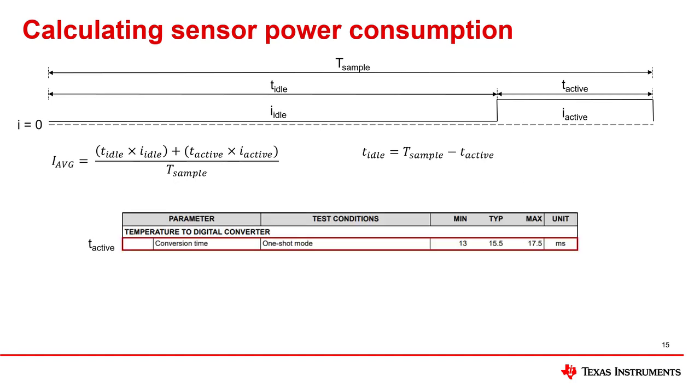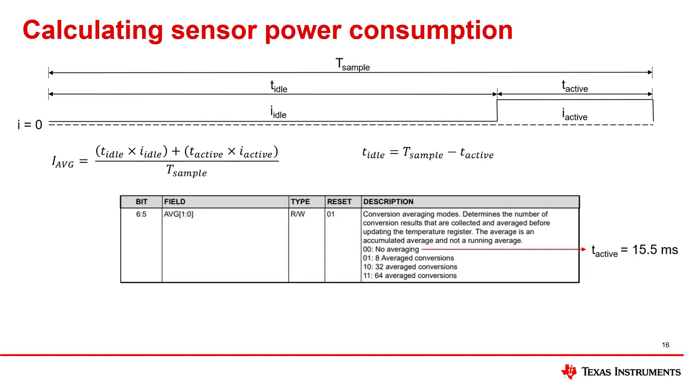Similarly, the value or values for t-active are listed as the conversion time or times in the datasheet. In most temperature sensors, we do not have the ability to change the active current level, i-active. We can, however, affect the time of conversion, t-active, by changing the level of resolution or precision of the temperature measurement. In the case of the TMP117, averaging is one configuration setting that will impact t-active. In this table from the TMP117 datasheet, we have the option to choose no averaging, 8 averaged conversions, 32 averaged conversions, or 64 averaged conversions, each of which impacts t-active as shown. As we'll see, reducing these values can be a valid strategy for reducing power consumption and increasing run time in battery-powered applications.